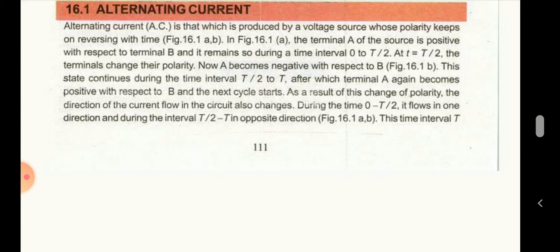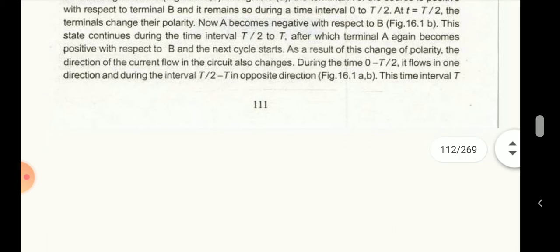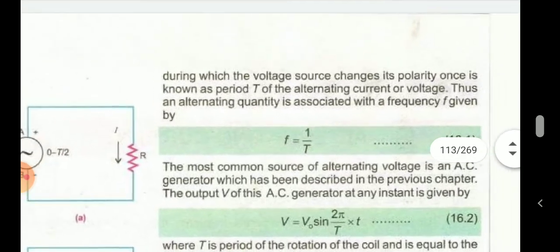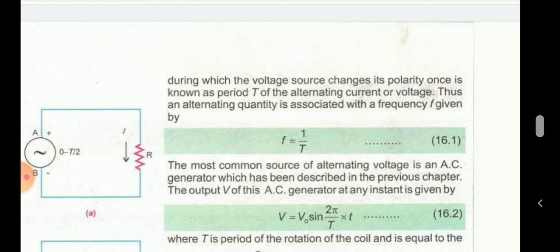As a result of this polarity change, the direction of the current that flows through the circuit also changes. During the time 0 to T/2, it flows in one direction, and during the time interval T/2 to T, it flows in the opposite direction. During the entire time interval T — known as the time period — the voltage source changes its polarity once. This T is known as the time period of the alternating current or AC voltage.